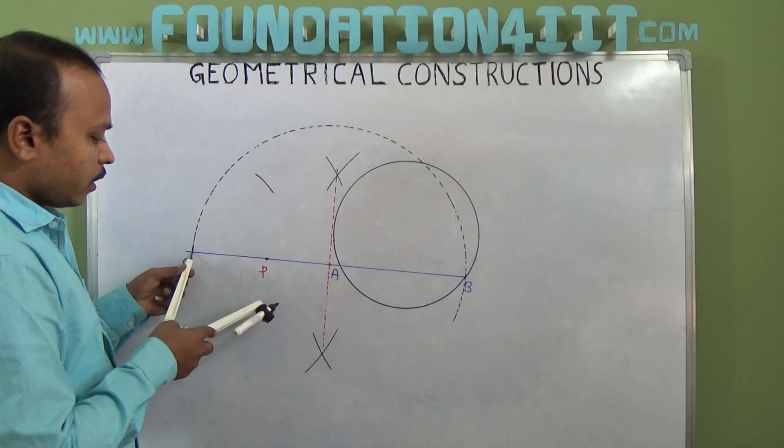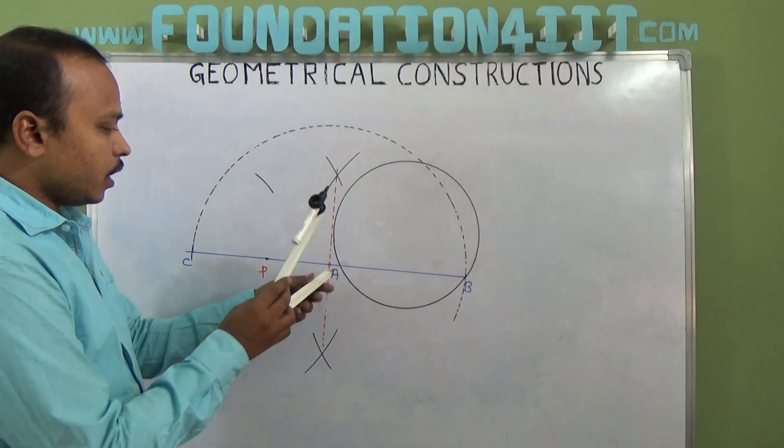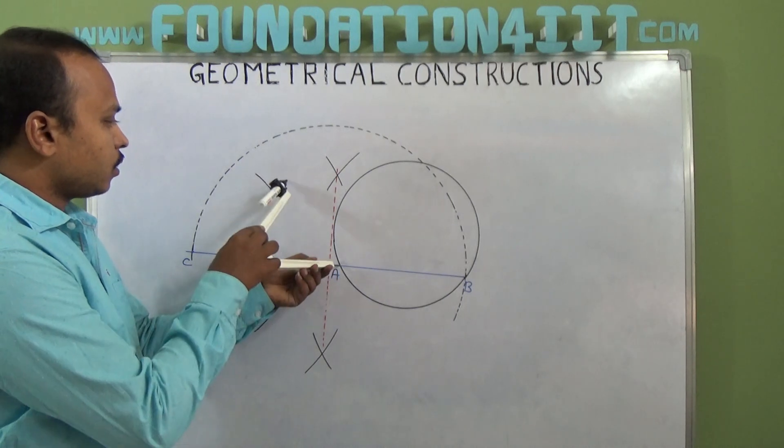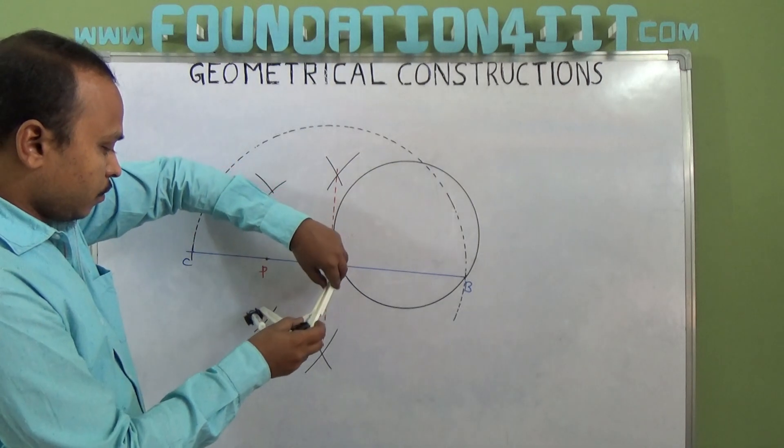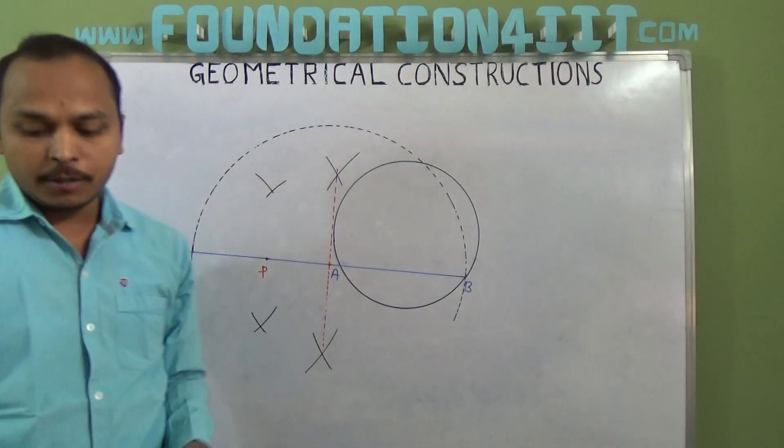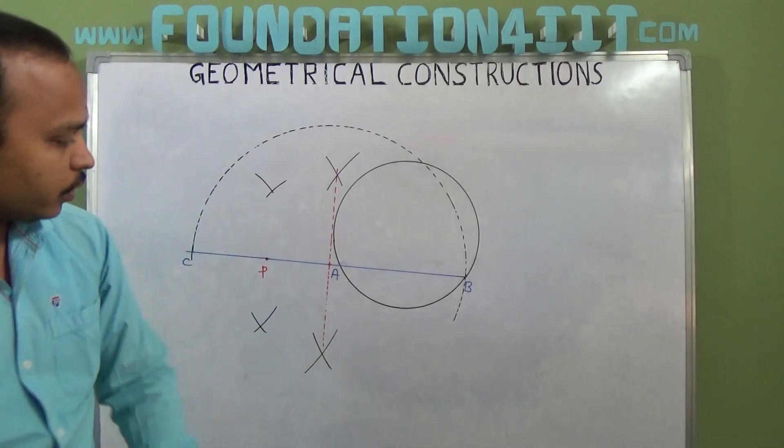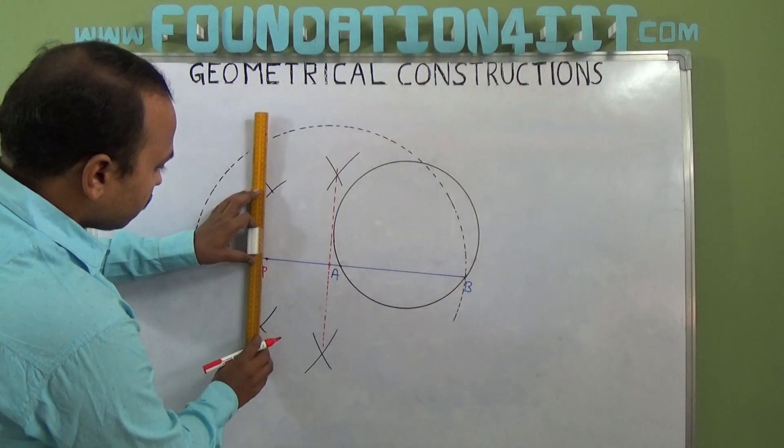Draw an arc above and below, and from this A draw an arc above and below. Because we know CP is the midpoint of A and C, right? Now join this, so this is the way. Extend this.